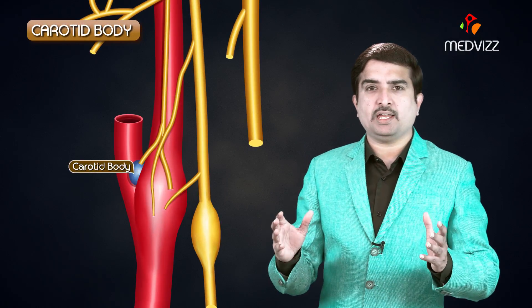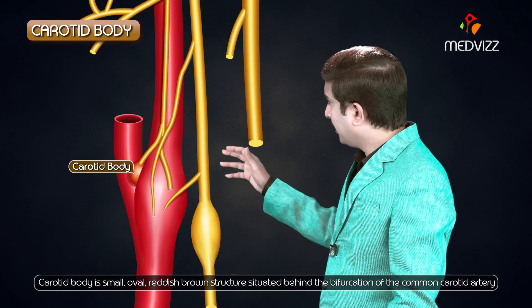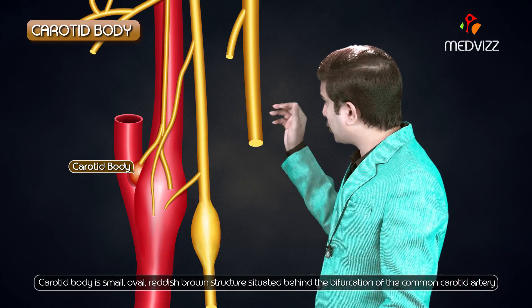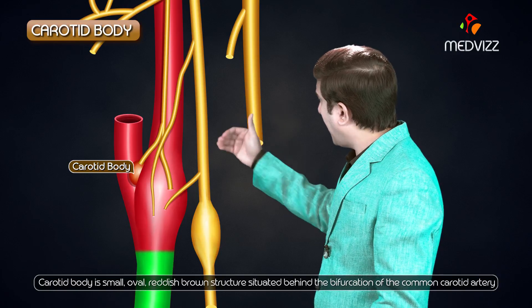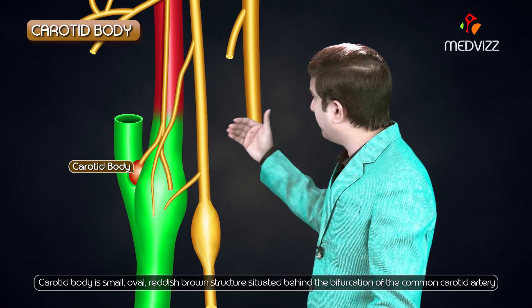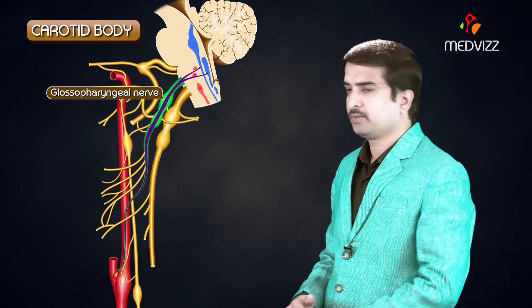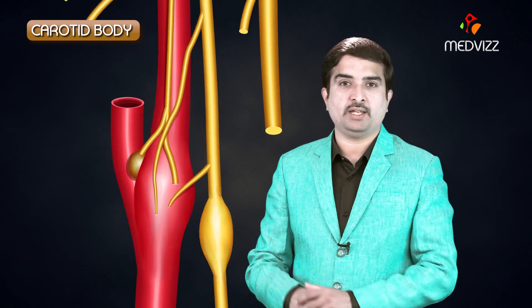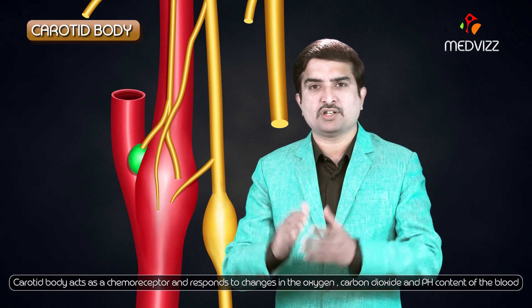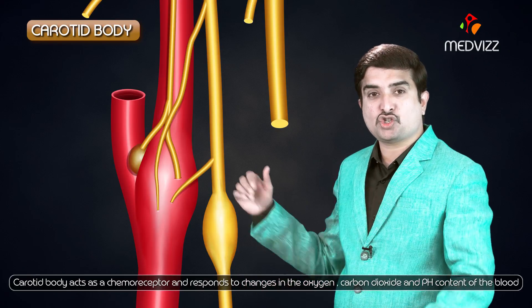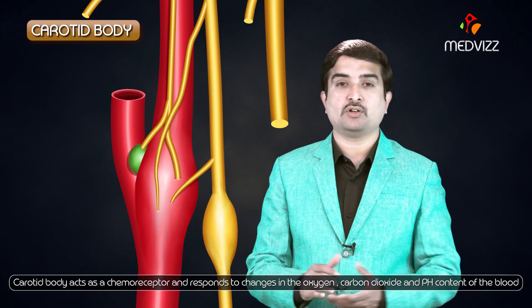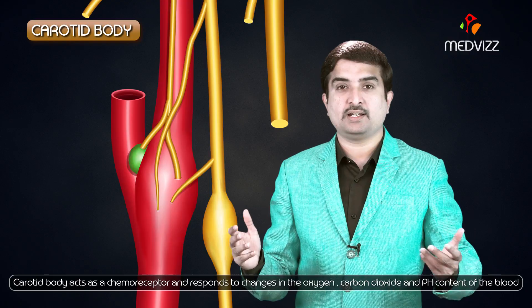The carotid body is a small oval reddish-brown anatomical structure situated behind the bifurcation of the common carotid artery. It receives a very rich nerve supply especially from the glossopharyngeal nerve. The carotid body acts as a chemoreceptor and responds to changes in the concentration of oxygen, carbon dioxide,